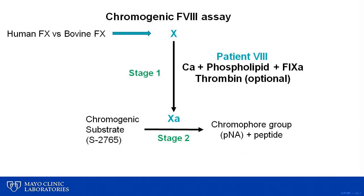In the chromogenic factor VIII assay, also known as the two-stage assay, the main rate-limiting step is the factor VIII level present in the test plasma. In stage I, reagents containing factor VIII and activated factor IX, with or without thrombin, are added to test plasma. In the second stage, the activated factor X cleaves a chromogenic substrate. The color generated is proportional to the factor VIII activity in the patient plasma and is read photometrically. It is important to note that the source of factor X in the reagent can be of human or bovine origin, and this makes a difference in whether the particular chromogenic assay can be used to measure factor VIII inhibitors in patients treated with emesizumab, also known as Hemlibra.